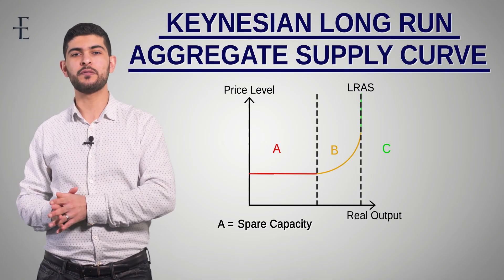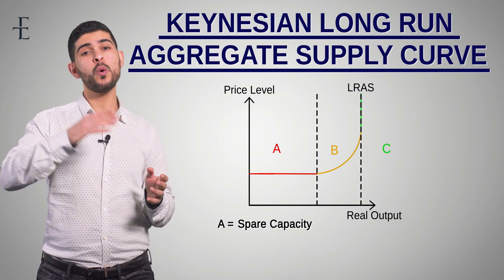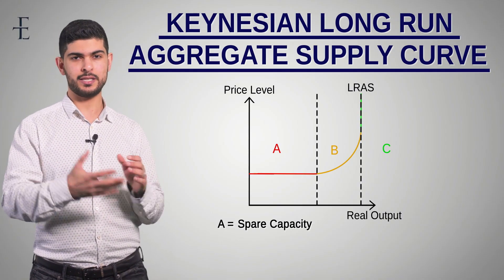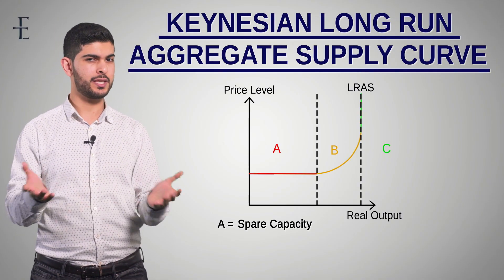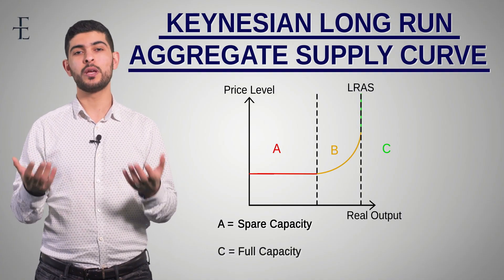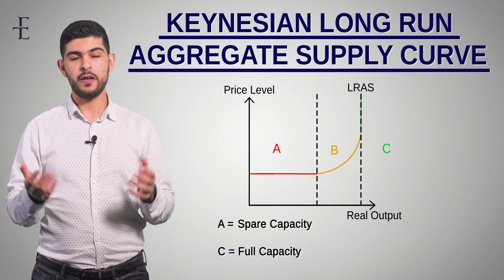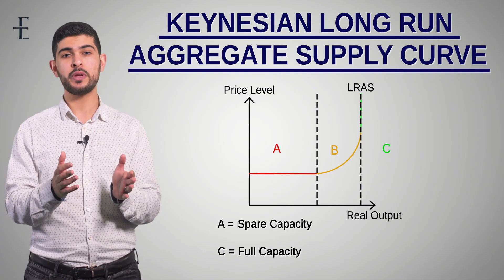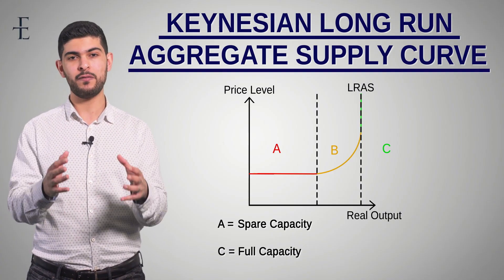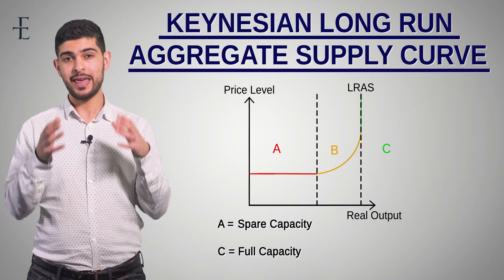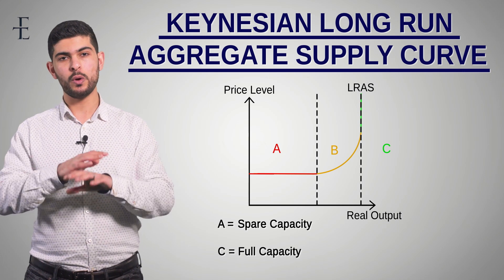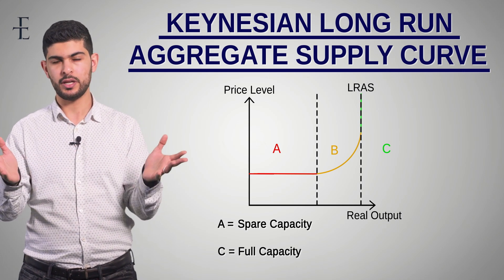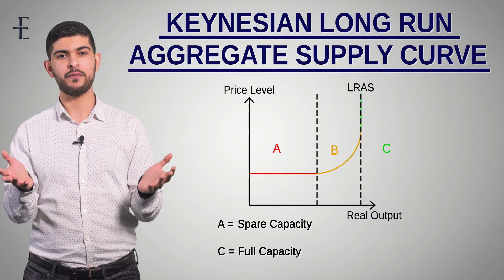Skipping from A to the other extreme — Section C. If A is spare capacity, then C is full capacity. If you're at full capacity, it means your economy is producing the maximum level of output it is capable of when all of its factors of production are efficiently employed. In other words, you're on the PPF.